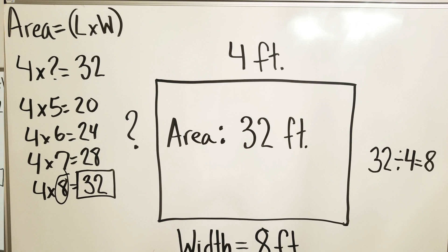But I thought to myself, what if I didn't know that 32 divided by four was eight? I know that the area is length times width, so four times something has to give me 32. So over here I even wrote out a few of my multiplication facts that can help me get to 32.